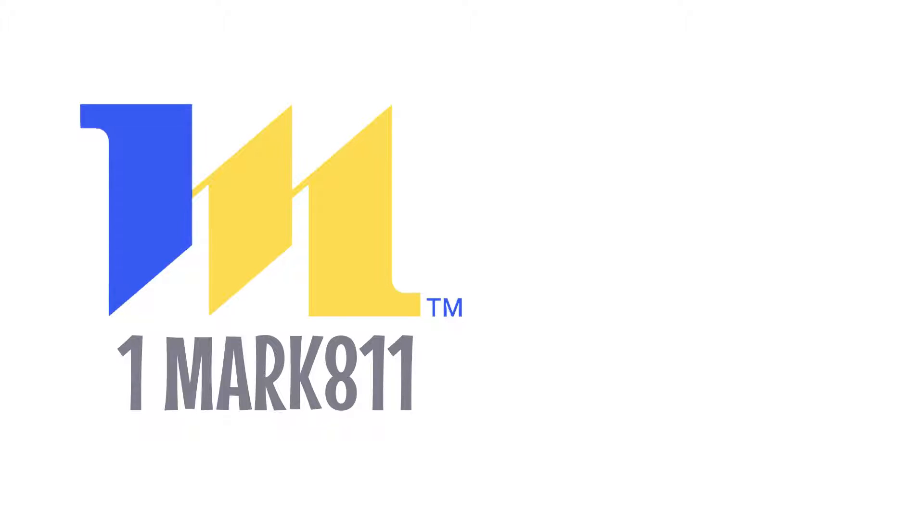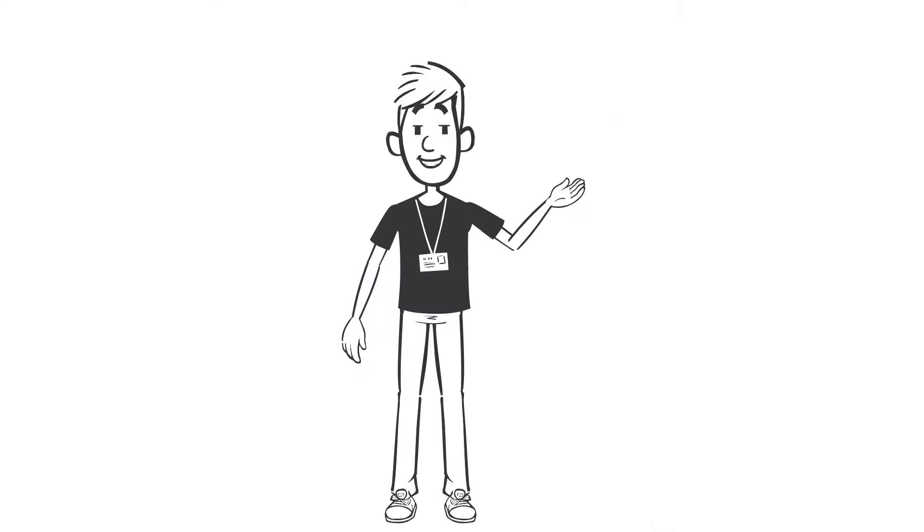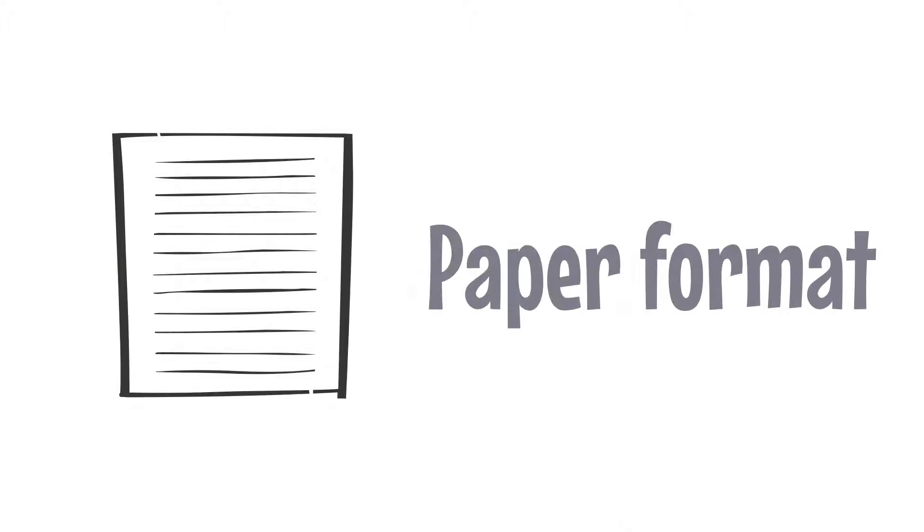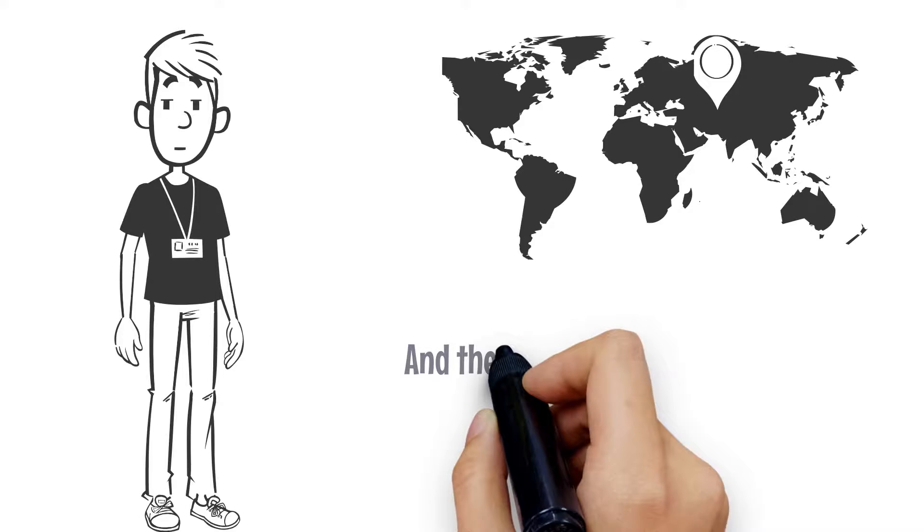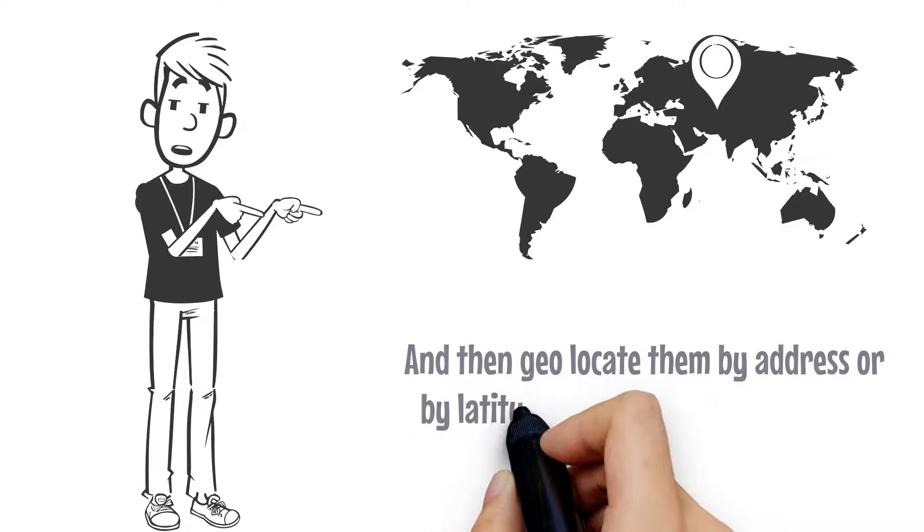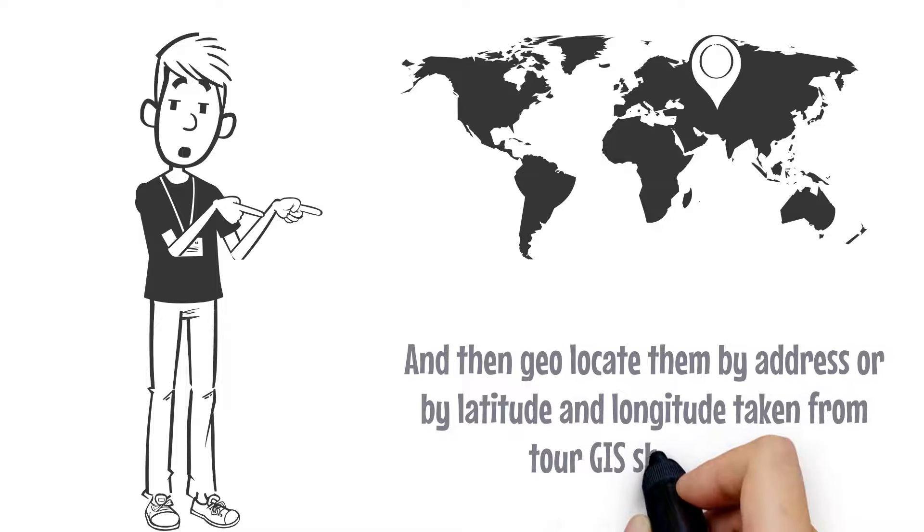OneMark 811 can take your field measurements and record drawings in digital format, or if they are in paper format, we can convert them into a digital format and then geolocate them by address or by latitude and longitude taken from your GIS shape files.